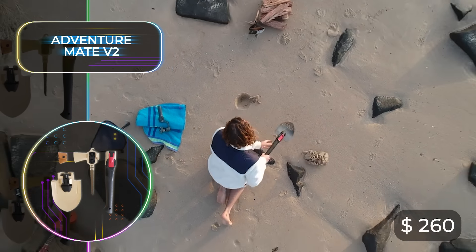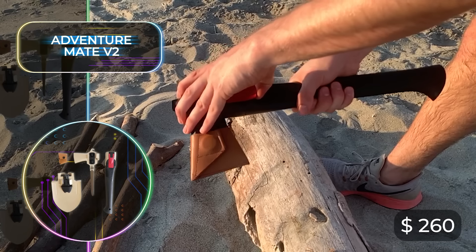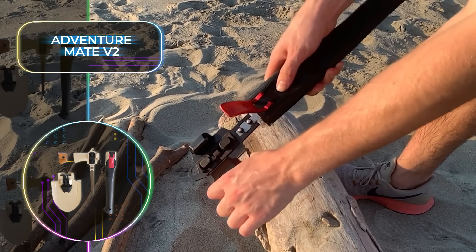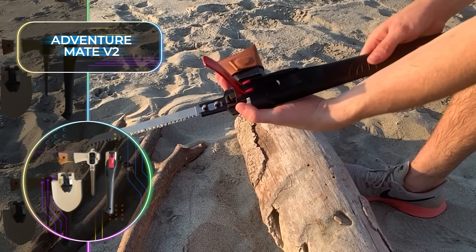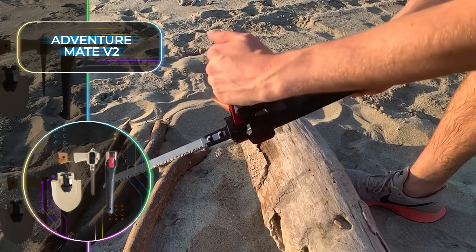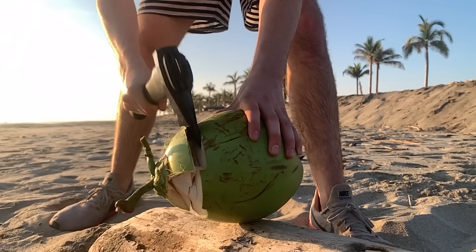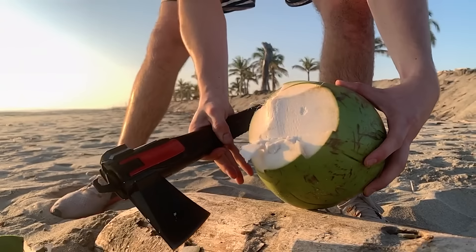This is also the manufacturer's second try at this revolutionary design, and this version of the axe boasts significant improvements over its predecessor, such as a patented two-stage locking mechanism, a reinforced saw blade, a sharpened shovel, and a durable Cerakote coating.